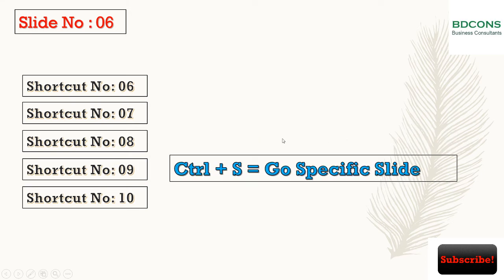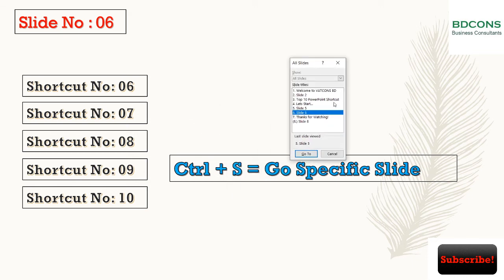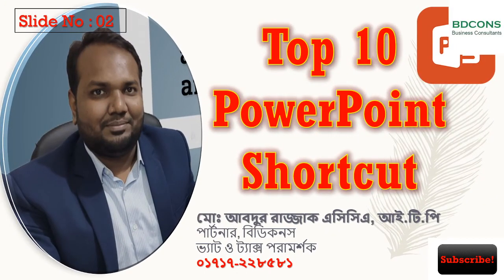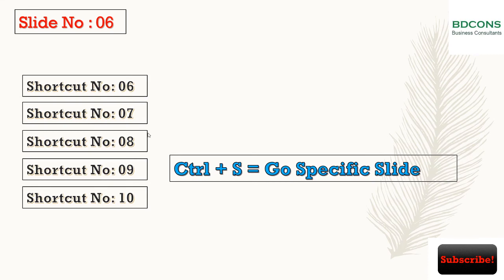Shortcut 9: Go to a specific slide. Press Ctrl+S and you will get a dialog box. From here, select the slide number you want to go to — for example, press 2 to select slide number 2, then press Enter to go to that slide. To go to another slide, press Ctrl+S again, select your slide number, such as slide number 6, and press Enter.